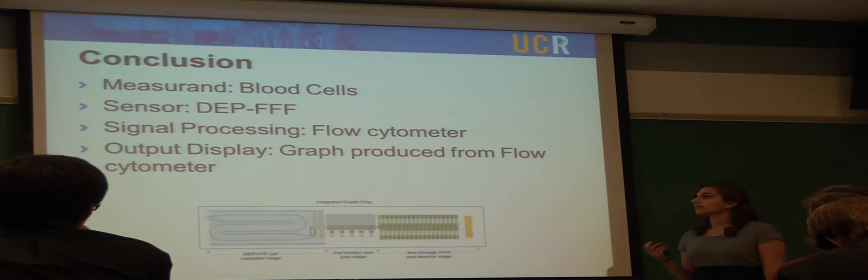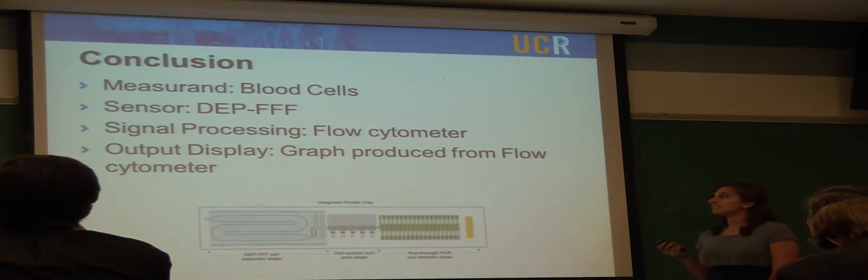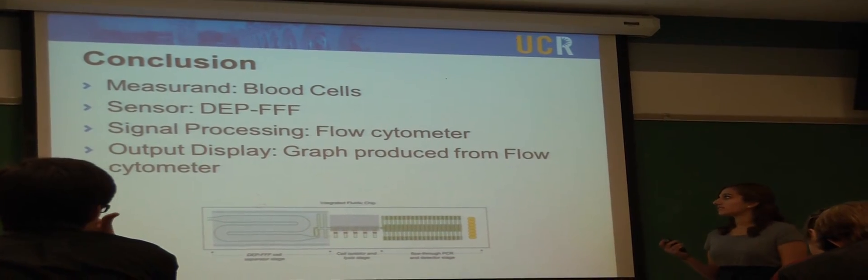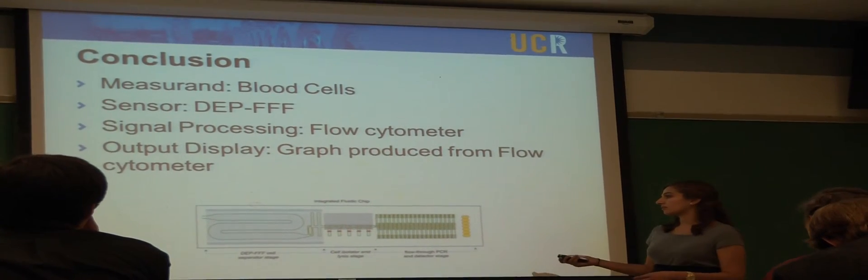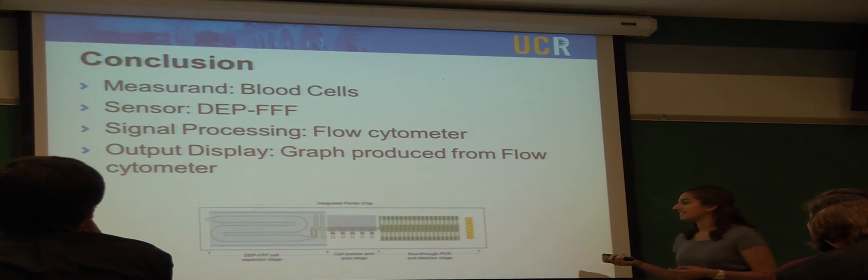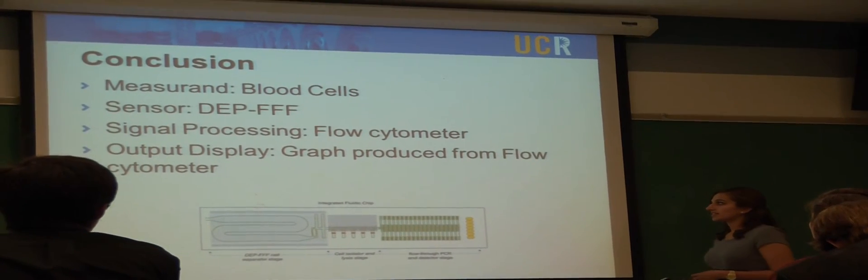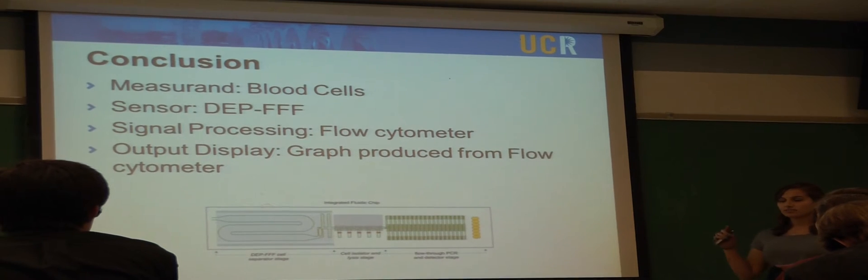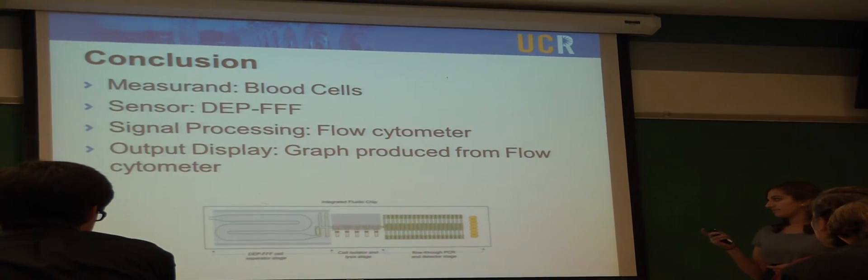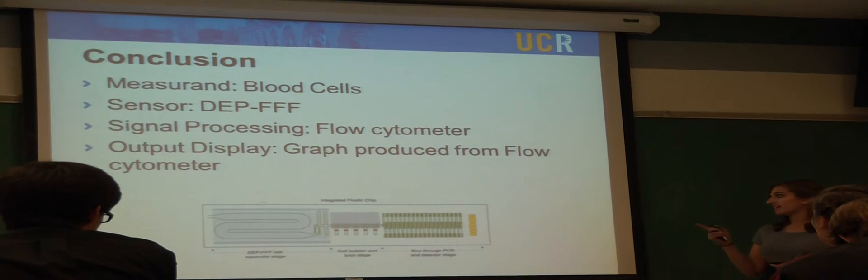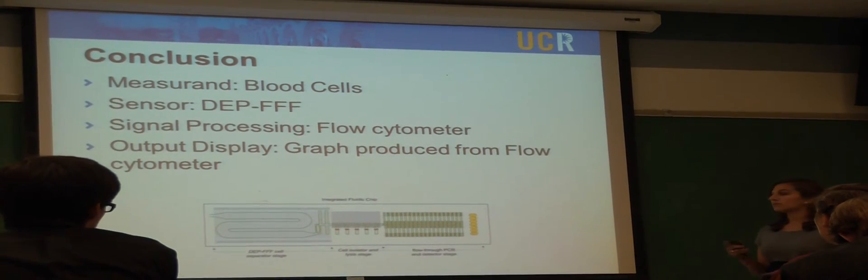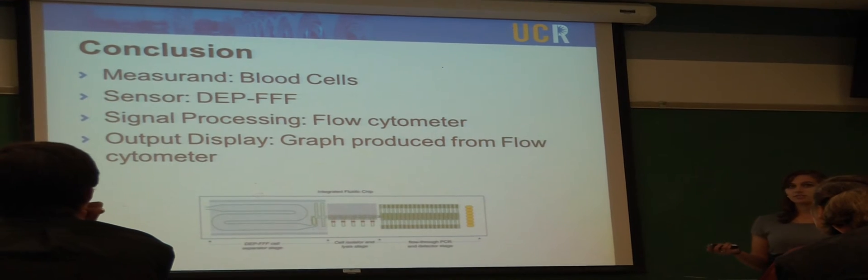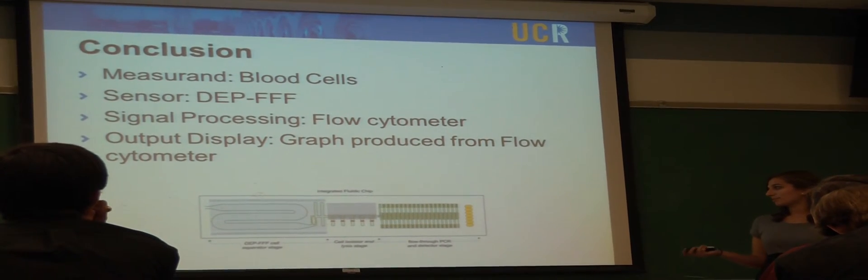In conclusion, the measurement for our device is the blood cells. The sensor is the DEP and the FFF. The signal processing is the flow cytometer. The output display is the graph produced from the flow cytometer. Here's an image of what we would like, or what researchers would like the chip to look like. As Nicole said, the data from the cytometer shows how the normal cells leave the chamber last. If we apply an alternating current, we can have the affected cells only pass through the chamber and lyse them from there. Once they're lysed, we can run a PCR and check for malaria. This all could be done on a chip without the flow cytometer, so it's portable and lightweight.